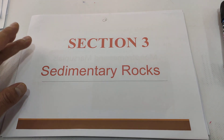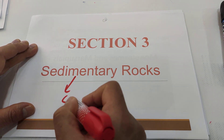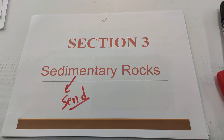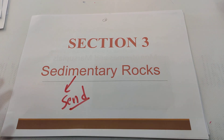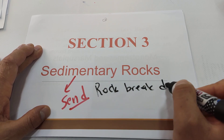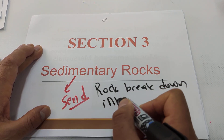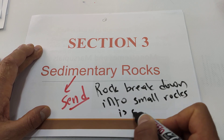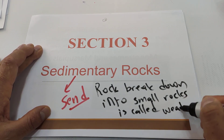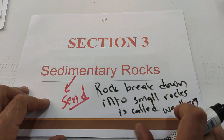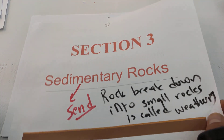Section three: sedimentary rocks. Sedimentary means coming from sand. Sand is small pieces of rock. Igneous rocks, which are very large rocks, break down by weathering — meaning the rock breaks down into small, very small rocks. We call those small rocks sand. When sands come together, they become sedimentary rocks.